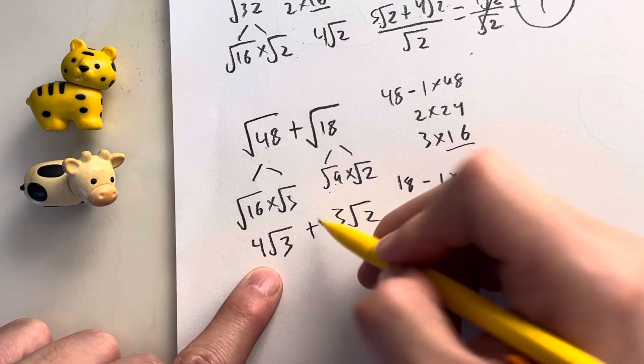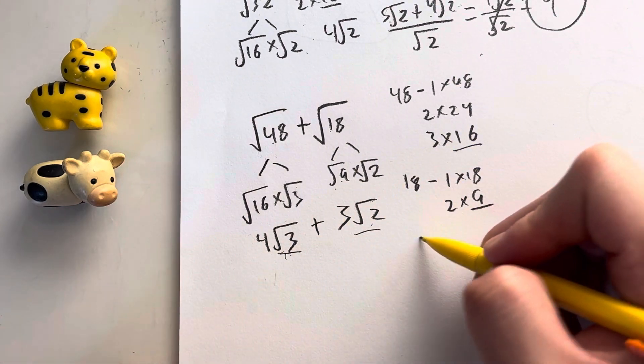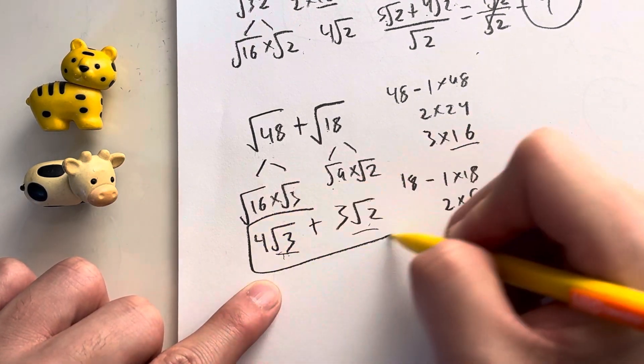And the thing about this is that when we're adding them, we can't actually add them because root 3 and root 2, that's like adding 4x plus 3y. You can't do that, right? So therefore, this would just be your final answer.